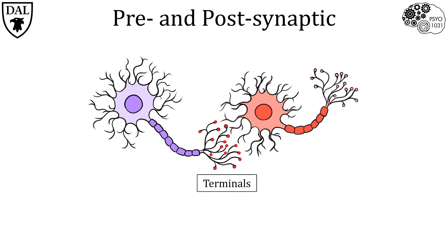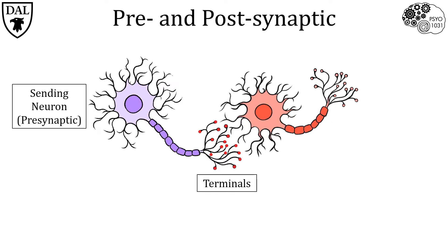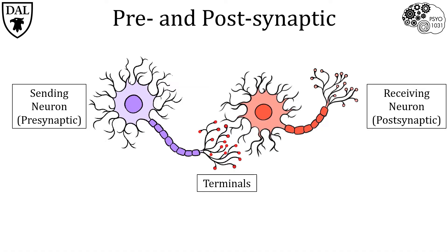The axon terminals of the neuron on the left, shown here in red, form synapses with the dendrites of the neuron on the right. Although most neuronal axon terminals synapse on dendrites like you see here, keep in mind they can also form synapses on other parts of the targeted neuron, such as the soma and the axon. The sending neuron on the left is referred to as the pre-synaptic neuron, and the receiving neuron on the right is referred to as the post-synaptic neuron. Keep in mind these are relative terms — most neurons act as both senders and receivers of information.